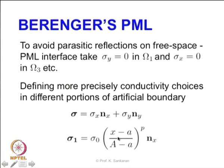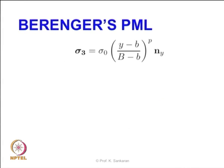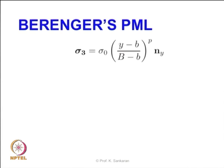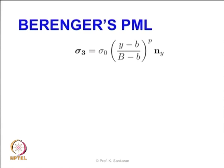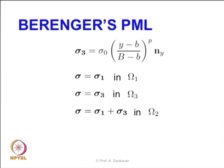For most practical applications we use a quadratic (parabolic) profile, i.e., p = 2. Similarly, for the y-oriented PML (region 3), sigma varies from y = small b to y = capital B — sigma is 0 at the free space interface and maximum at the outer boundary. In the corner domains, both the x and y sigma profiles from region 1 and region 3 are applied together.